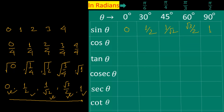If you write these numbers in reverse order, then we get the values of cos from 0° to 90°. So the value of cos 0° is equal to sin 90°, which is 1. Value of cos 30° is equal to sin 60°, which is root 3 by 2. Value of cos 45° is equal to sin 45°, so cos 45° is 1 by root 2. Value of cos 60° is equal to sin 30°, therefore cos 60° is half. And value of cos 90° is equal to sin 0°, therefore cos 90° is 0.